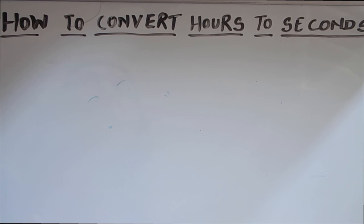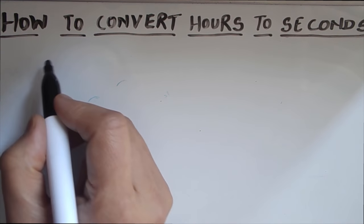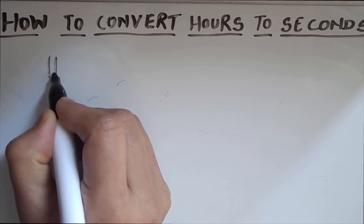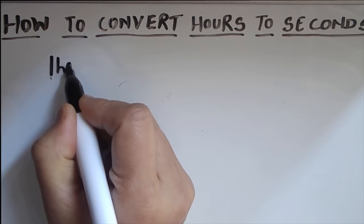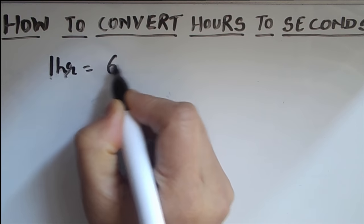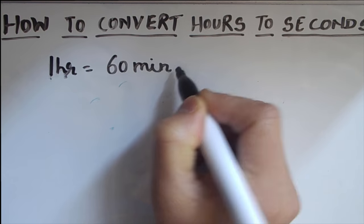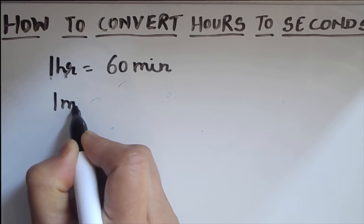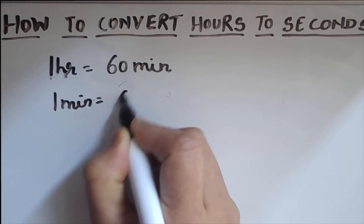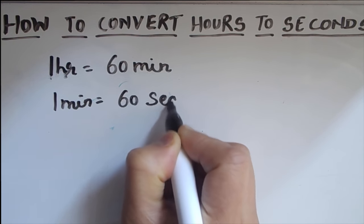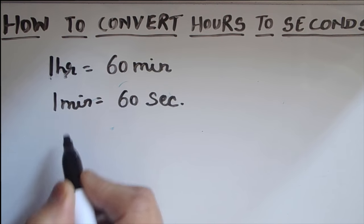Hello viewers, today we are going to learn how to convert hours to seconds. This is a request, so let's get started. This is very easy and it will not be a much longer video. For this, we need to know that one hour is 60 minutes and one minute is 60 seconds.